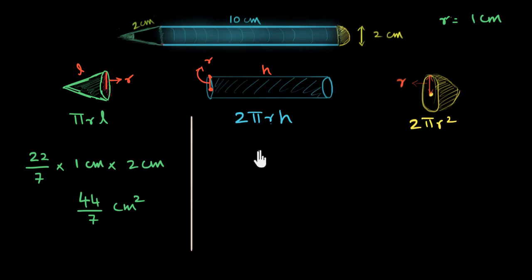So what about 2πrh, 2 times 22/7 multiplied by r, which is 1 centimeter. Notice that the r is going to be the same, this circle and this circle are the same for over here and here. 1 multiplied by h, h is this length, right? That's 10 centimeters. Let's draw a line again over here, just to keep things separate.